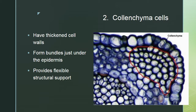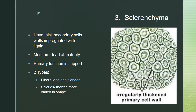Collenchyma cells are thicker and form in bundles usually just underneath the epidermis, providing structural support particularly for herbaceous plants. You can feel this as a slightly rigid rib in plant stems. Sclerenchyma cells have very thick secondary cell walls with a lot of lignin, are mostly dead at maturity, and function as support. They can have long fibers or shorter, more squat sclerids.